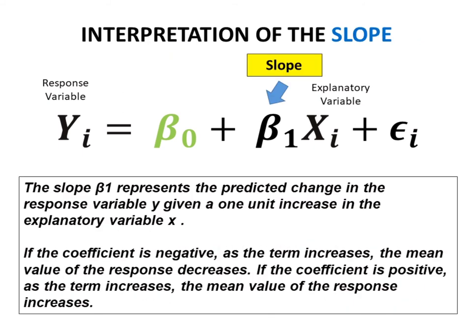Interpretation of the slope. The slope represents the predicted change in the response variable Y given a one-unit increase in the explanatory variable X. If the coefficient is negative, as the term increases, the mean value of the response decreases. If the coefficient is positive, as the term increases, the mean value of the response increases.